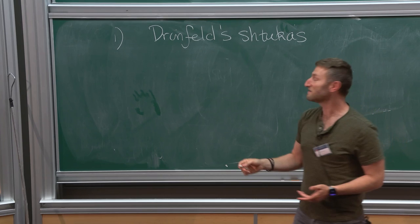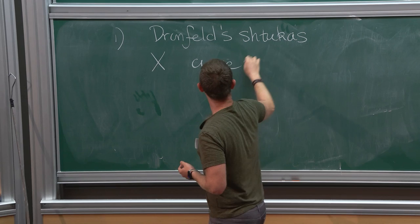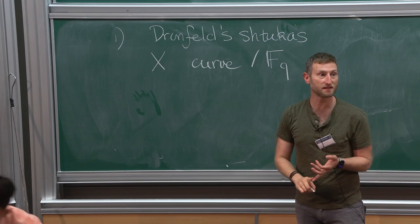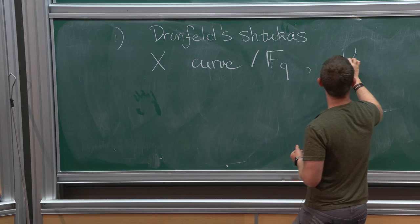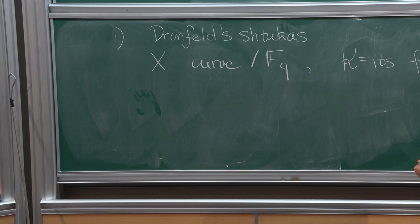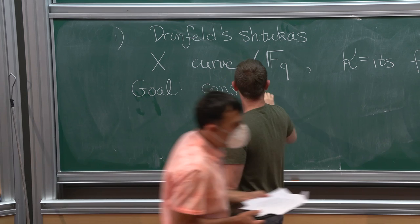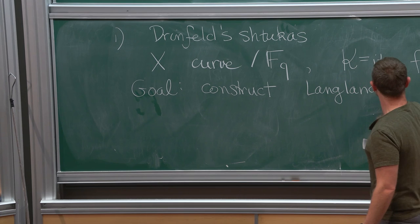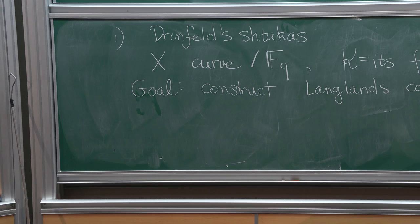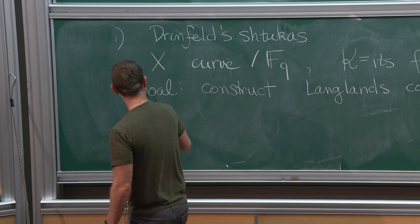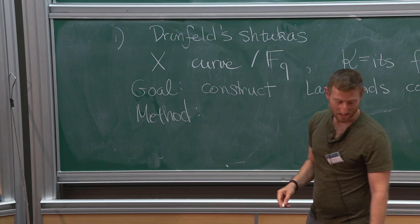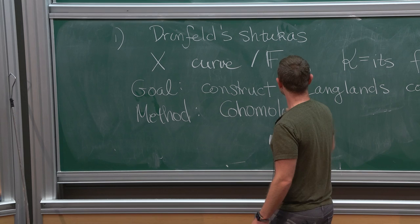Why define such things at all? Because we're interested in the Langlands program. In this context, let X be a curve over F_Q — projective, non-singular, and geometrically connected. Let K be its function field. Our goal is to construct the Langlands correspondence for K, and let's consider the group GL_N over K. So these will just be GL_N Stukas. The method employed by Drinfeld and then Laforg is to consider the cohomology of some space of Stukas.